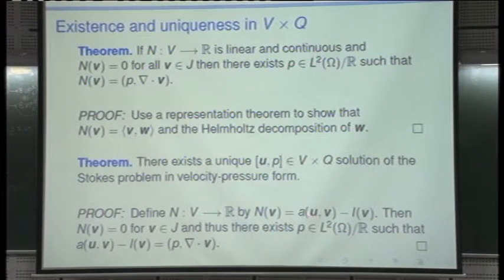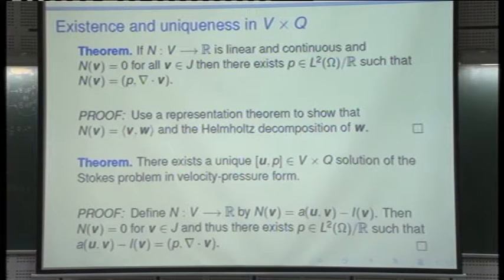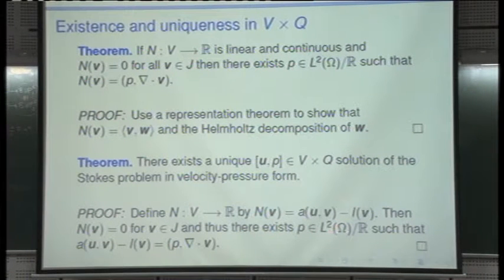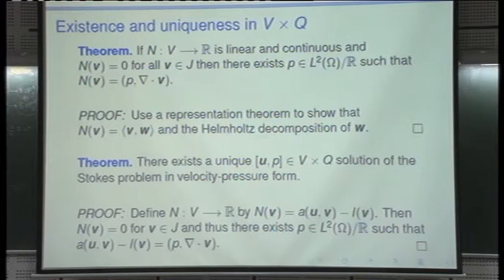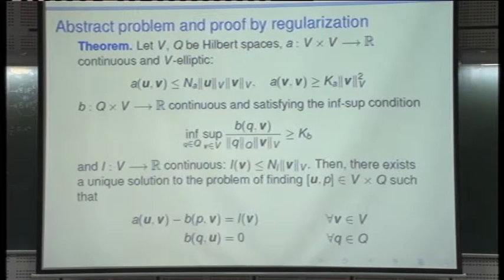The reduced inf-sup condition to check is: the infimum over pressures of the supremum over velocities of b(q,v), divided by the norm of q times the norm of v, must be greater than or equal to a positive constant β'. Ladyzhenskaya proved this holds for Q = L2 and V = H1, but she didn't pay particular attention to it — it was just a step in a proof in her book. That is why her name appears here. Babuška recognized the condition's importance in the finite element context, and Brezzi applied it specifically to the Stokes case and proved convergence under that condition.